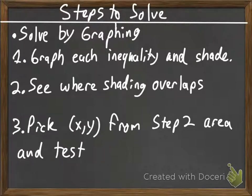So there's three steps. Step one is to just graph each inequality and shade. And after we shade, that's where step two comes in. There's going to be a point where the shading is going to overlap. And where we see the shading overlap is where our solution is going to be.